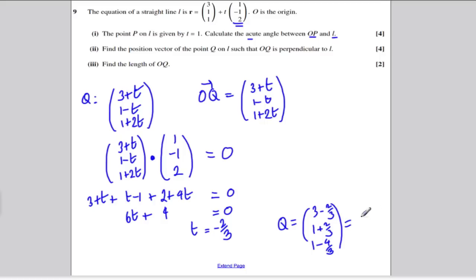So if you work that out, I think you get 2 and 1/3, 1 and 2/3, and you get -1/3. So that would be the position vector of Q, such that OQ is perpendicular, or at right angles, to L.